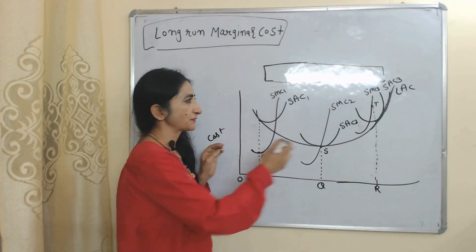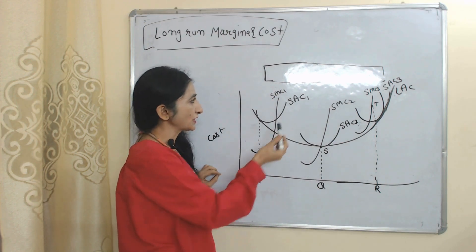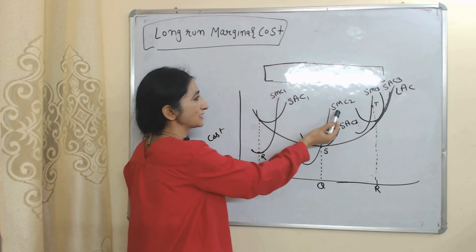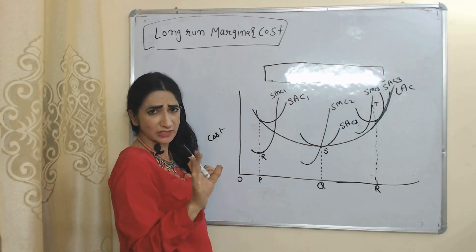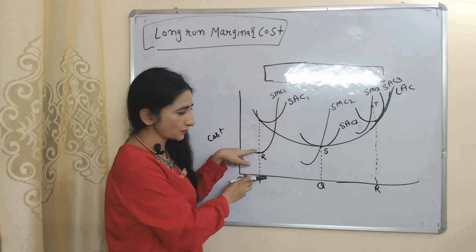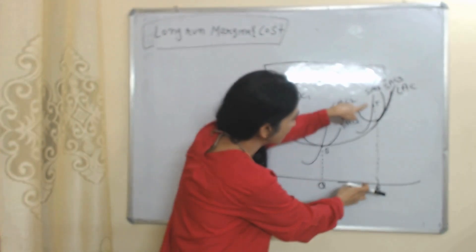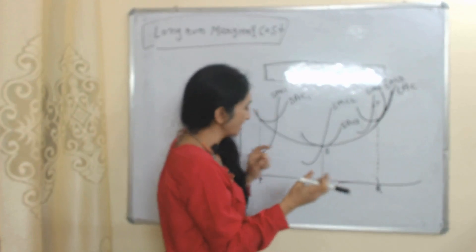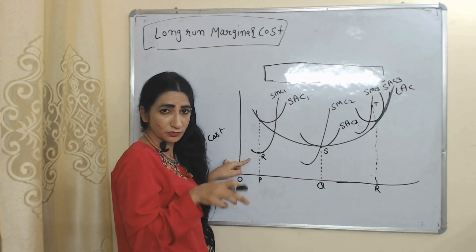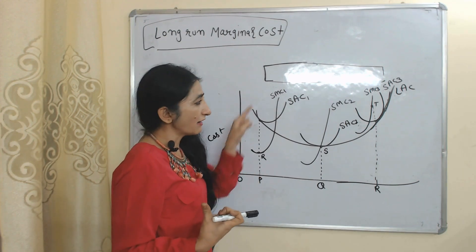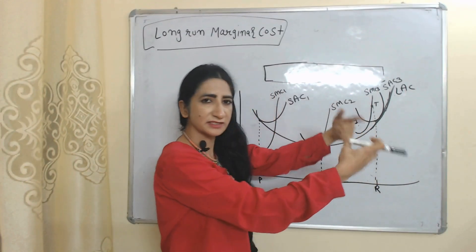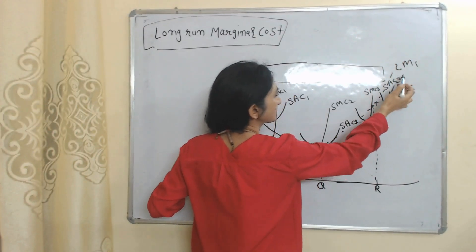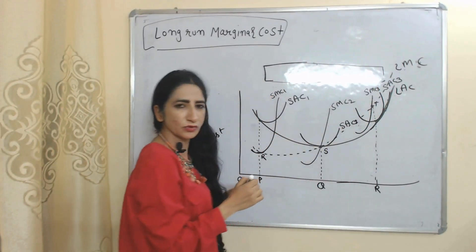Now we are going to talk about long-run marginal cost. The LAC curve represents the long-run average cost. SAC1, SAC2, and SAC3 represent short-run average cost curves. SMC1, SMC2, and SMC3 represent short-run marginal cost curves for three plants. RP is the marginal cost of the first plant, SQ is the marginal cost of the second plant, and TR is the marginal cost of the third plant. Initially our marginal cost is low but after a certain time period it increases because we are receiving economies of scale. When we join all minimum points of short-run marginal cost curves we receive our long-run marginal cost curve — represented by LMC.